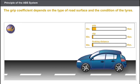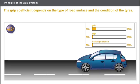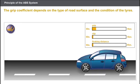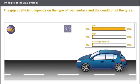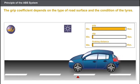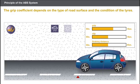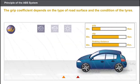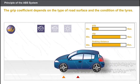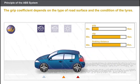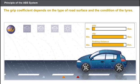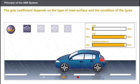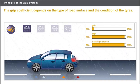Now let's take a look at the different conditions of grip. On dry concrete, the grip coefficient is at its maximum and the slip is almost zero. On a wet road surface, there is less grip and the slip value increases. On fresh snow, the grip coefficient drops and the slip value is very high. On ice, the grip coefficient is almost zero and the slip value is at its maximum level.